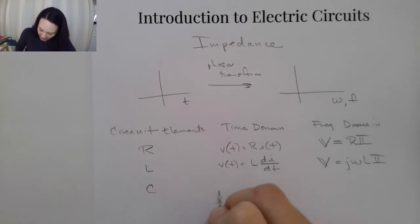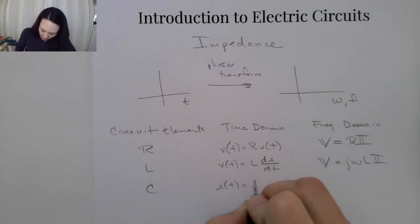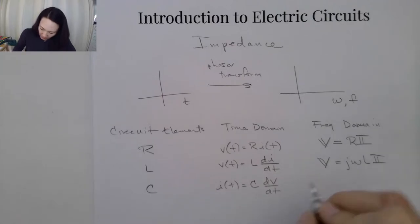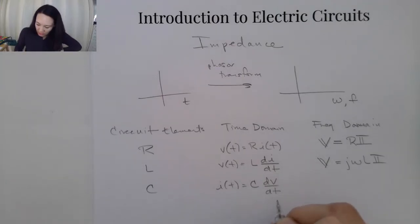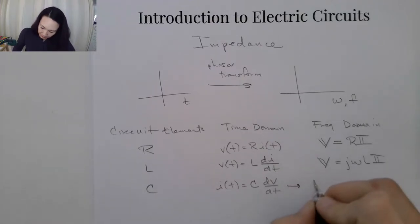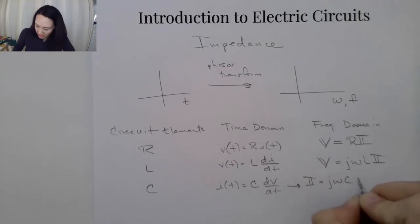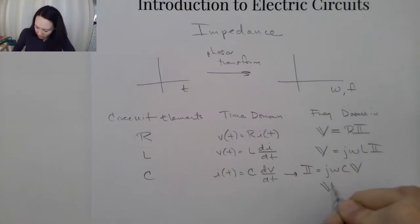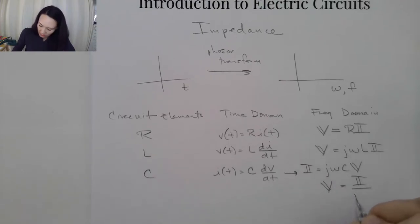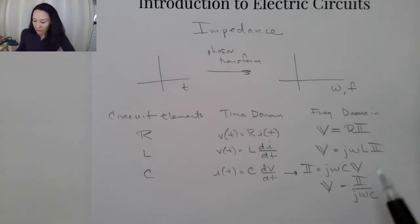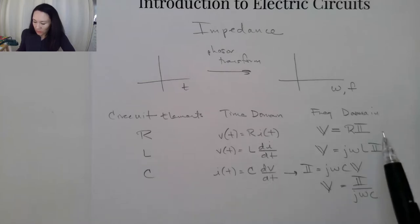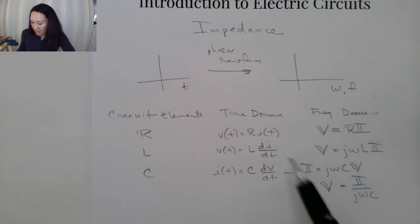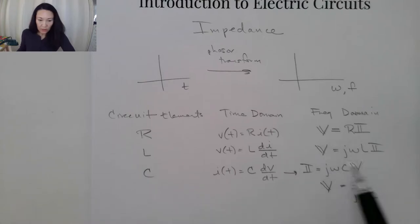For a capacitor, the derivative term is for the current: I = C times dV/dt. When we change this to the phasor domain, phasor I equals j·omega·C times phasor voltage. To write it in terms of V in terms of I, that would be phasor V equals phasor I divided by j·omega·C. A big advantage of transforming these equations into the frequency domain is that we don't have to deal with any derivatives or integrals — we just multiply these values.